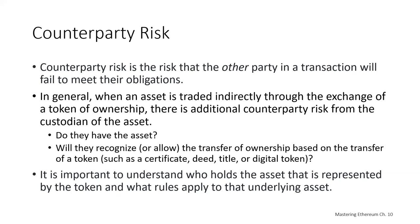When an asset is traded indirectly through the exchange of a token of ownership, there is an additional counterparty risk from the custodian of the asset. Does that custodian actually still have the asset? Will they recognize or allow the transfer of ownership based on the transfer of a token — such as a certificate, deed, title, or digital token? It's important to understand who holds the asset represented by the token and what rules apply to that underlying asset.